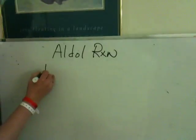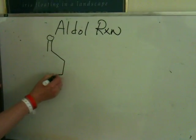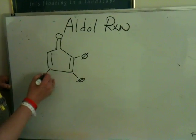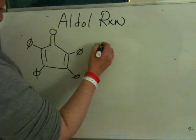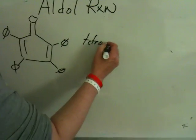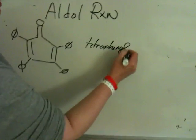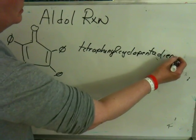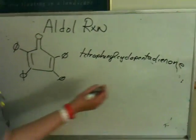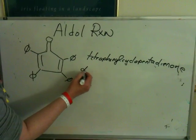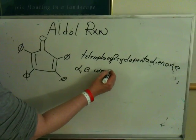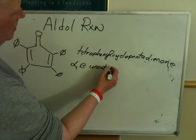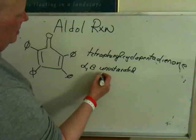So what we're going to make is this species — this is tetraphenylcyclopentadienone.